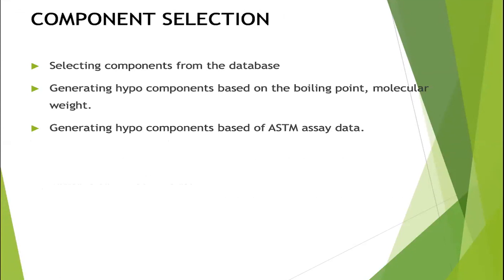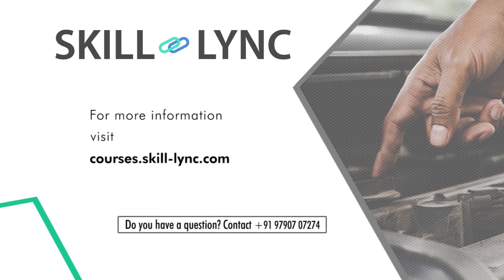If the actual components are not available, you can generate a hypo-component using laboratory data such as density and other measured properties, to replicate the real component in the simulation. Additionally, when you have ASTM assay data for crude oil — such as ASTM D86 distillation data giving volume fraction versus true boiling point — you can use that data to generate a set of hypo-components that replicate the crude in the simulation environment for sizing and heat and material balance development.